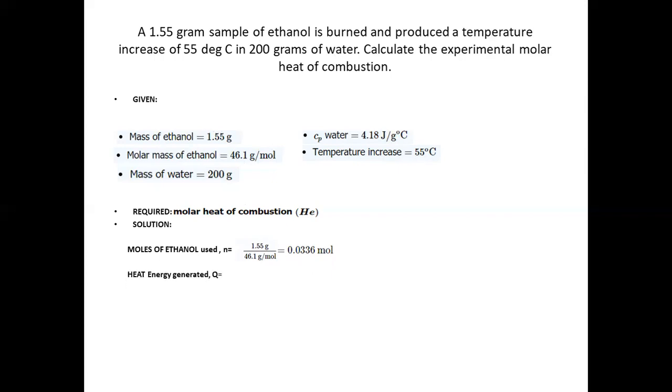The second step is to calculate the heat generated, Q. This is dependent on the heat produced through water. It is calculated as Q equals m cp delta t with the parameters as water. We have the specific heat of water at 4.184 joules per gram degree Celsius multiplied by the mass of water at 200 grams times the change in temperature at 55 degrees Celsius.